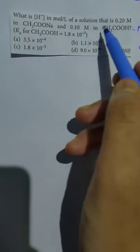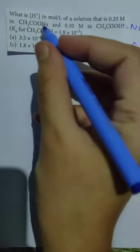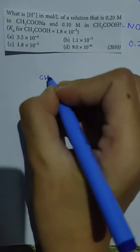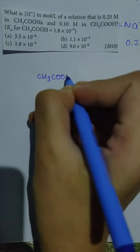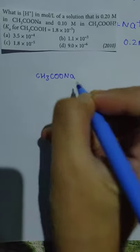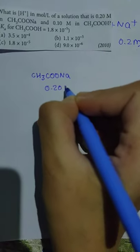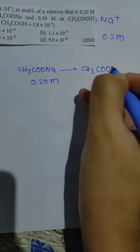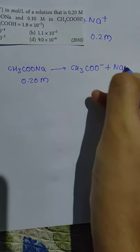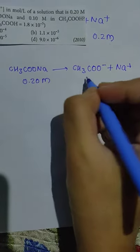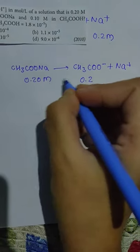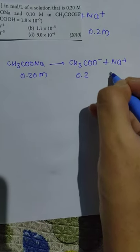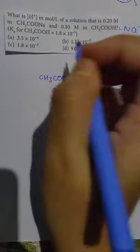What is [H⁺] in mol per liter of a solution that is 0.20 mol/L CH₃COONa? CH₃COONa is 0.20 mol and it is completely dissociated into CH₃COO⁻ and Na⁺. We put 0.20 mol for CH₃COO⁻ and 0.20 mol for Na⁺.